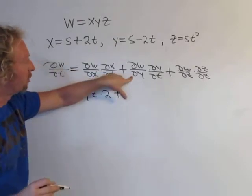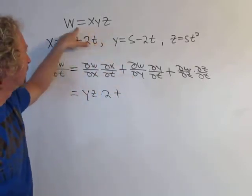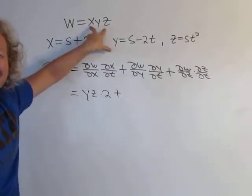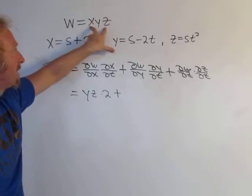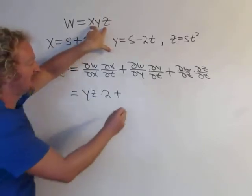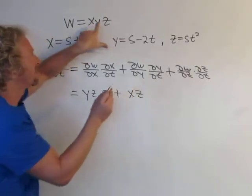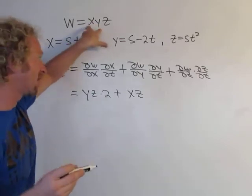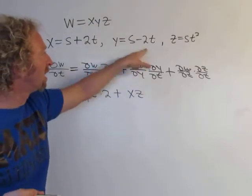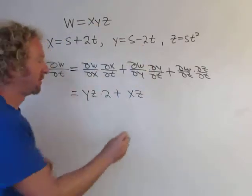Plus ∂w/∂y: y is the variable, x and z are constants, so the derivative gives us xz, because the derivative of y is 1 and x and z hang out as constants. Then ∂y/∂t is −2.